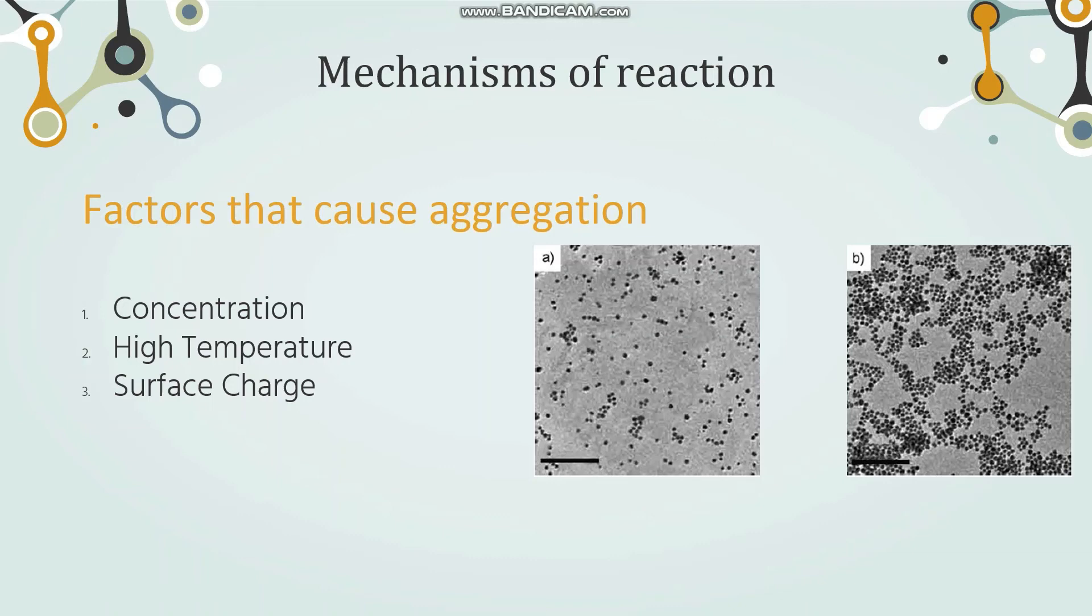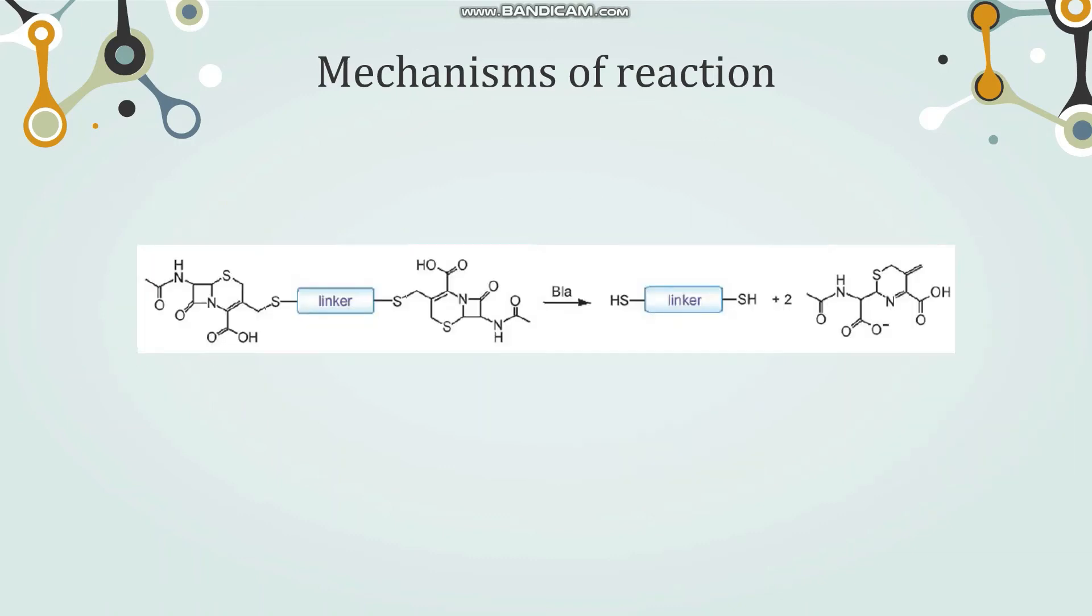How did scientists manipulate this aggregation of nanoparticles? Let us zoom into the reaction mechanism. This compound here contains two beta-lactam rings. Under the presence of beta-lactamase, the hydrolysis of beta-lactam ring leads to an amine and carboxylate acid. This brings forth an E1 elimination reaction where sulfur is the leaving group. This liberates the linker with two thiol ends.